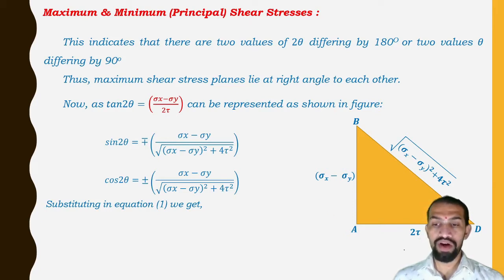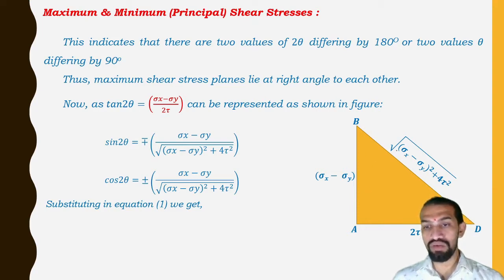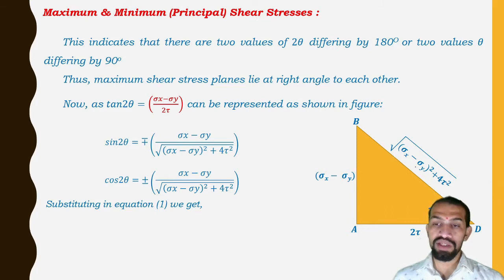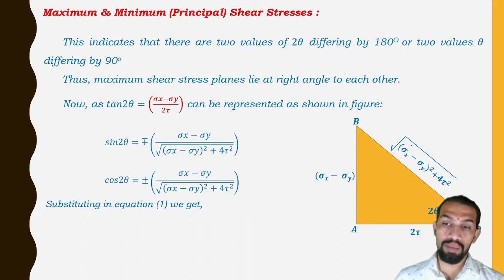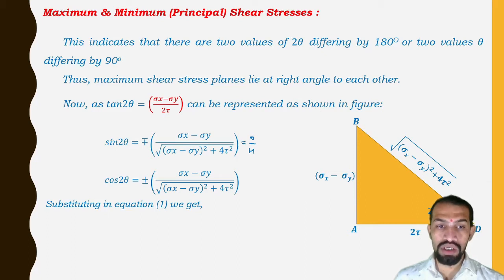So σ_x − σ_y divided by 2τ represents the ratio for this right-angle triangle. Using the Pythagorean theorem, AB² + AD² = BD², so BD = √[(σ_x − σ_y)² + (2τ)²] = √[(σ_x − σ_y)² + 4τ²]. From this, sin 2θ is opposite over hypotenuse and cos 2θ is adjacent over hypotenuse.